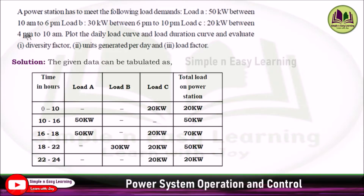From 0 to 10, Load A is 10 am to 6 pm, Load B is 6 pm to 10 pm, and Load C is 4 pm to 10 am. Load C falls in the time zone 0 to 10 hours, so you can put 20 kilowatt in Load C. Similarly, for 10 am to 4 pm, Load A runs 10 am to 6 pm at 50 kilowatt, so substitute 50 kilowatt. These are the load variations in Load A, Load B, and Load C.